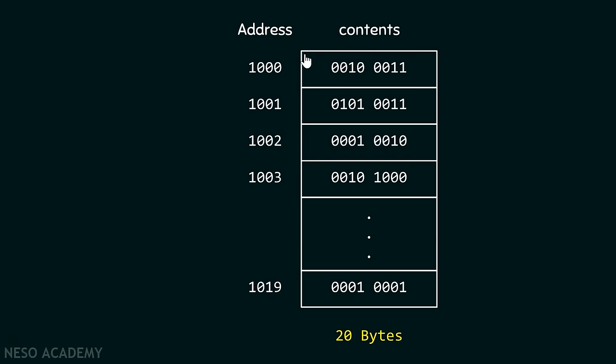Suppose in my computer I have a memory which is capable of storing 20 bytes of information. Each block of memory is capable of storing 1 byte of information. I am assuming that starting address of this memory is 1000 and ending address is 1019.